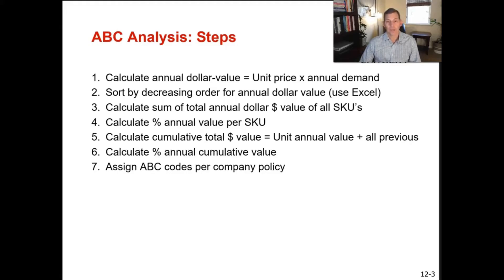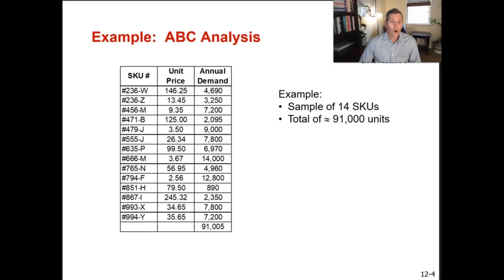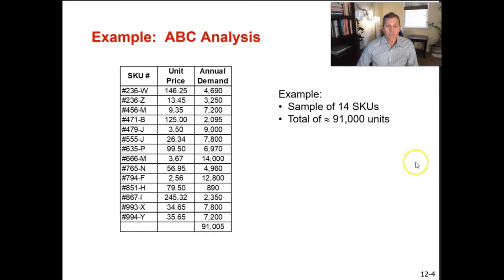Company policy will be given to you both in this course and in your professional career. I like to use 80, 15, and 5, but not everyone uses that same classification methodology. In our example, we have 14 different SKUs with a unit price and annual demand for each. There are 4,690 units of SKU 236-W at $146.25 each. When you add up all demands across the 14 SKUs, you get 91,005 units purchased annually.